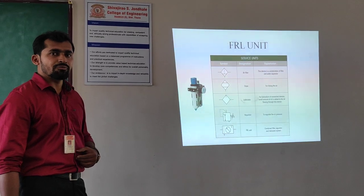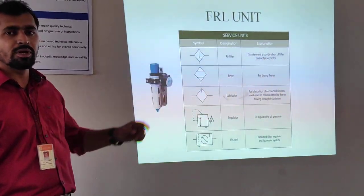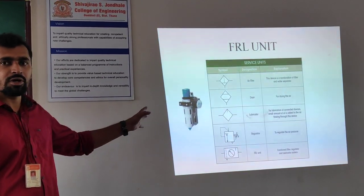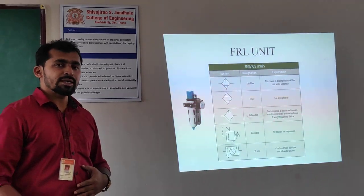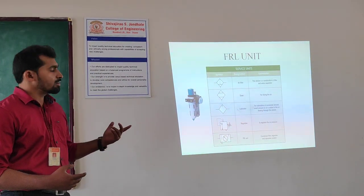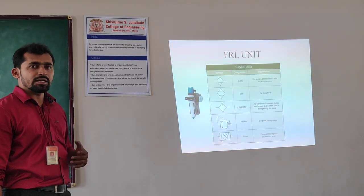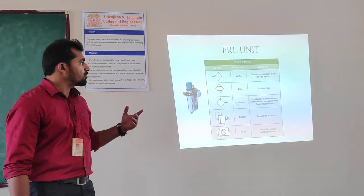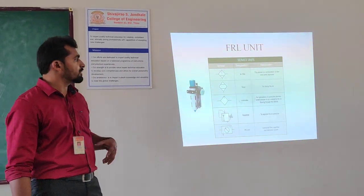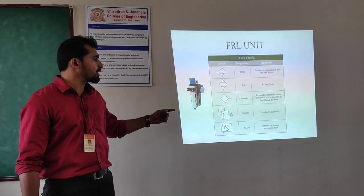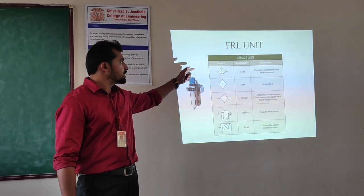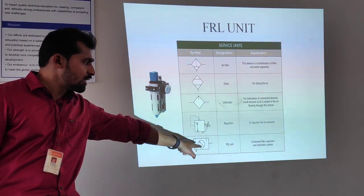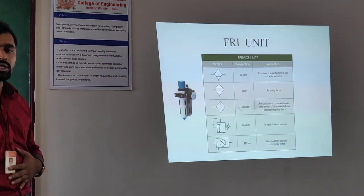Next is a FRL unit. FRL stands for filter, regulation, and lubrication. The FRL unit also contains a pressure gauge. Generally when we take compressed air from the compressor, the air is very dirty and dusty particles are present. So when we are using the pneumatic system we have to use pure compressed air. For that reason we have to filter, regulate, and lubricate this compressed air by using the FRL unit. The symbol for filter, dryer, lubricator, regulator, and the complete symbol of the FRL unit are the standard ISO symbols we use in circuit diagrams.